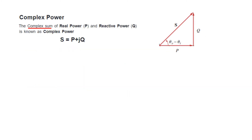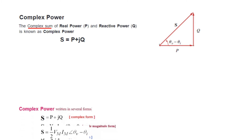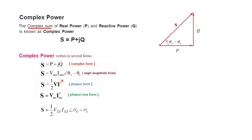Complex power is the summation of real power and reactive power. S = P + jQ. There are several equivalent ways of writing this expression, all of which can be used to calculate the complex power.